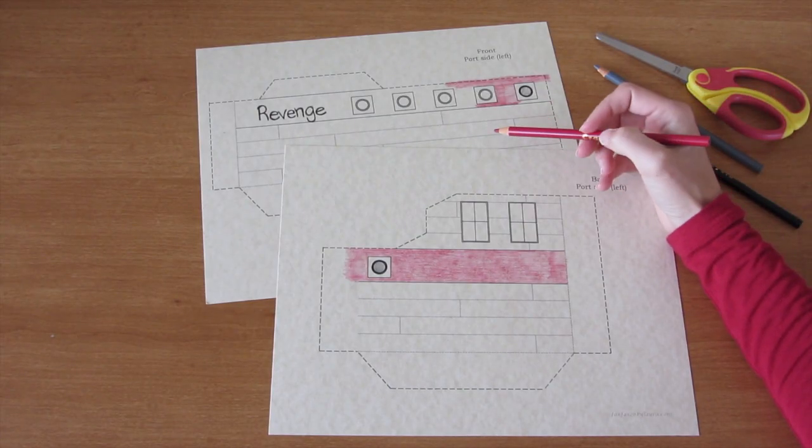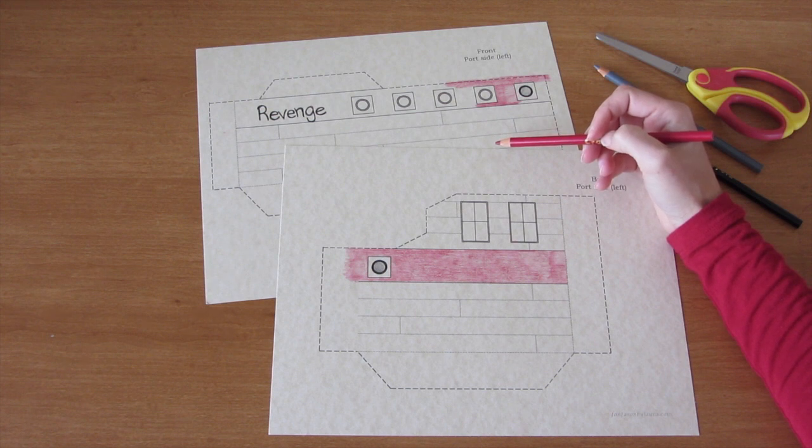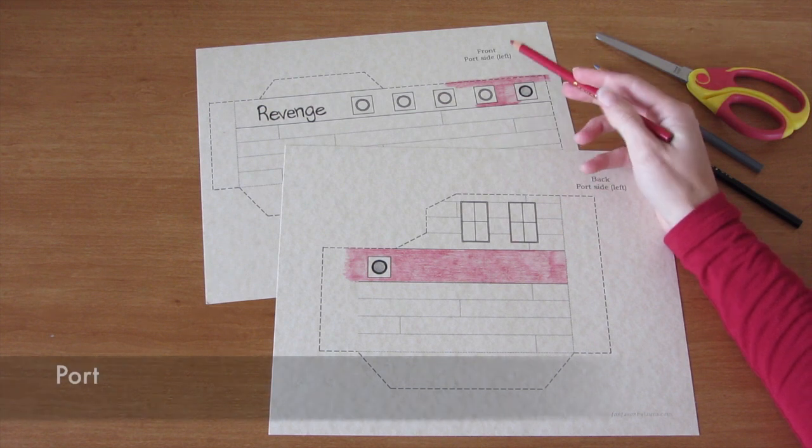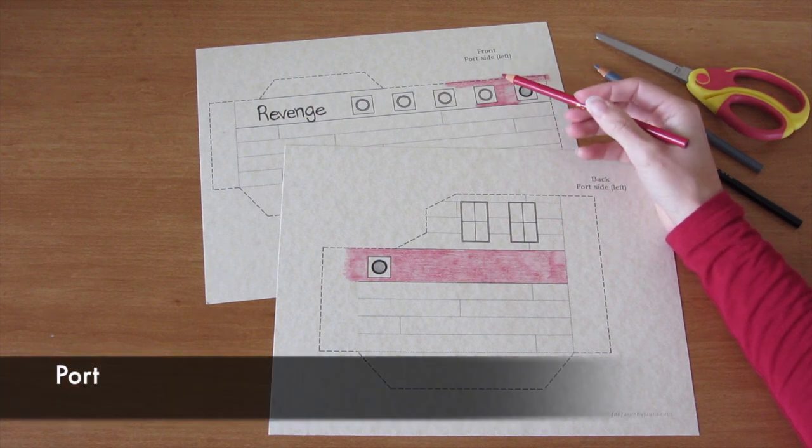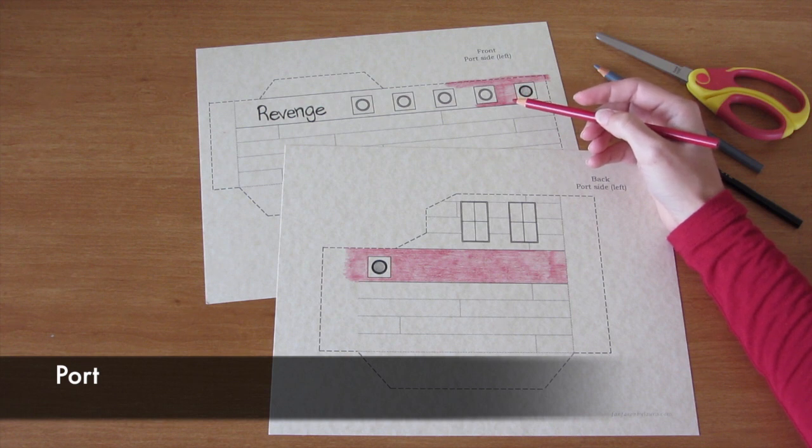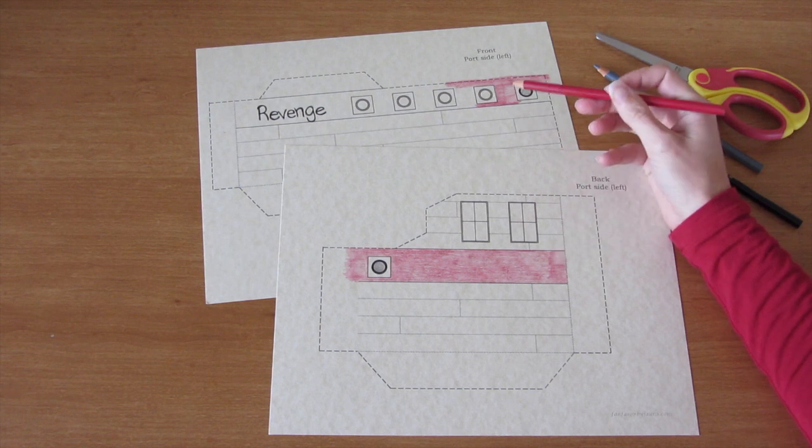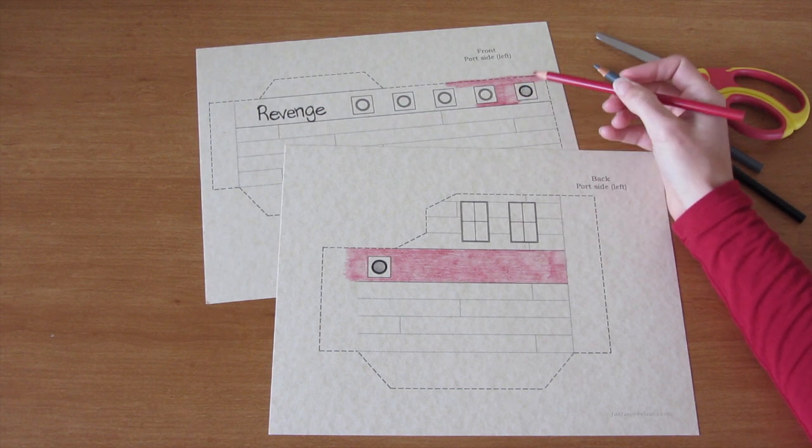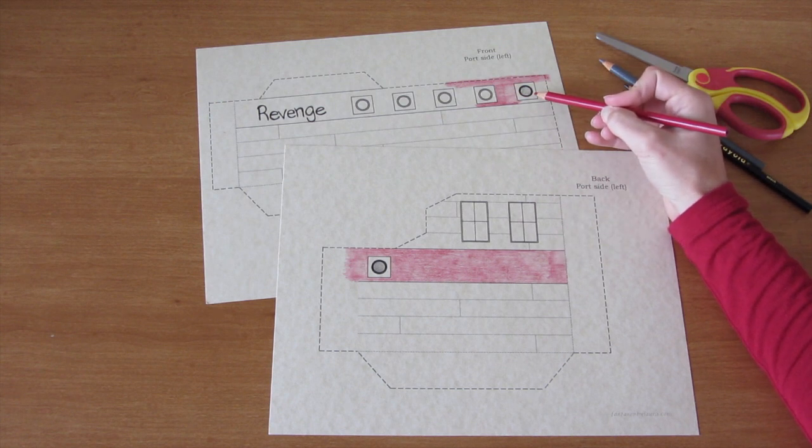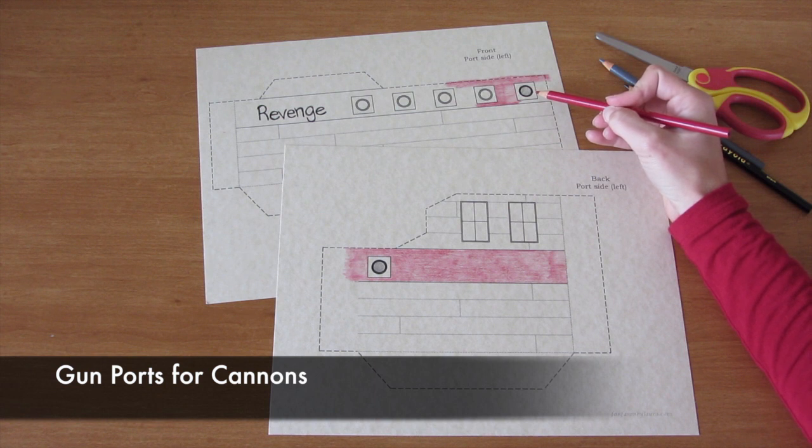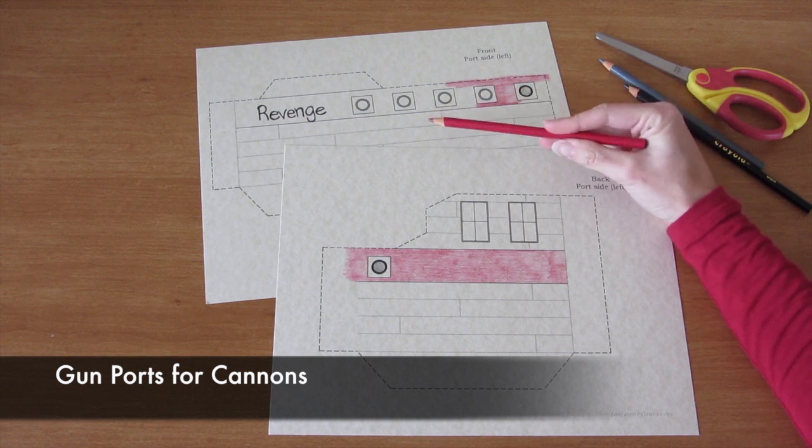I am working on coloring the hull of my ship now. This is the port side, which means that if you are in the ship facing forward, this is what's on the left side. I'm coloring the stripe red. And then these are the gun ports that the cannons stick out of. So as you can see, there's a lot of gun ports.